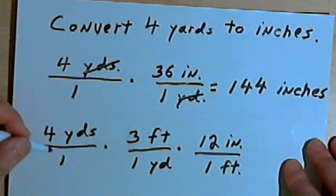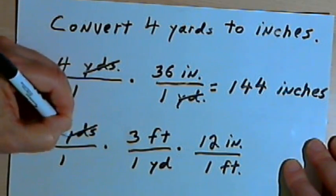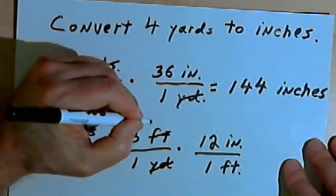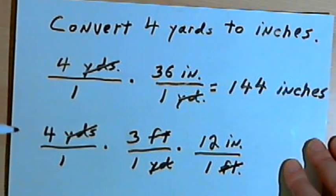I can cross out things that I have in common. So I've got yards in the numerator, yards in the denominator, feet in the denominator, feet in the denominator. All my denominators are now 1, so I just have to multiply the numerators.